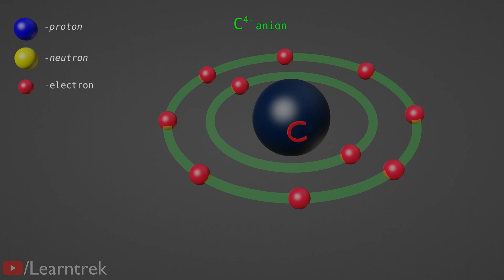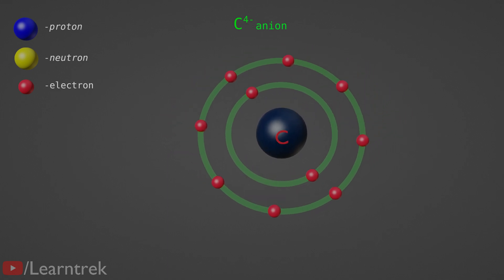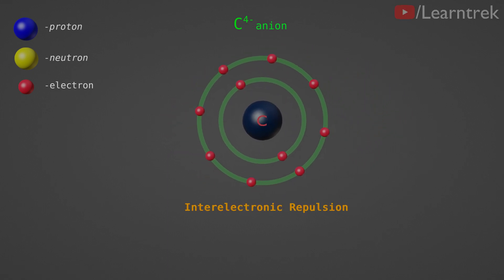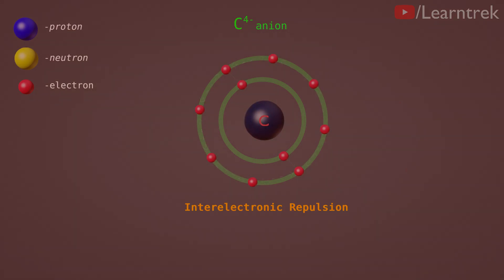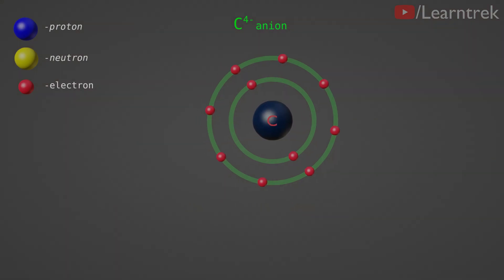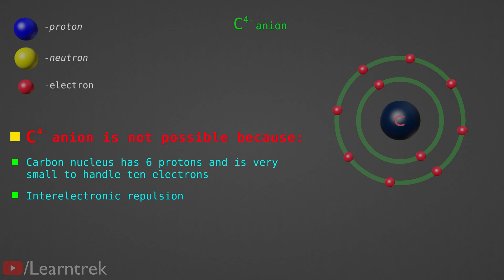Another reason for instability in the C4⁻ ion is inter-electronic repulsion — the repulsion between electrons — which increases after gaining 4 electrons. This increase in inter-electronic repulsion makes the C4⁻ ion unstable and unable to hold 10 electrons. Because of these two reasons, the carbon C4⁻ ion is not possible.